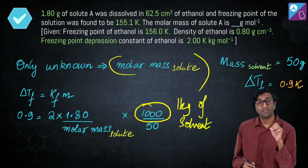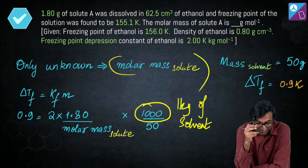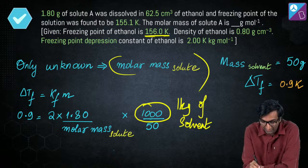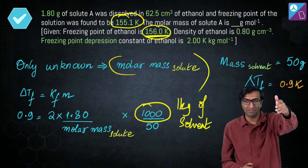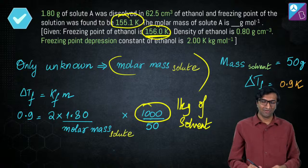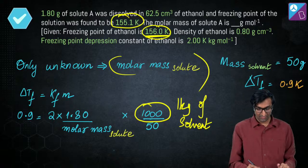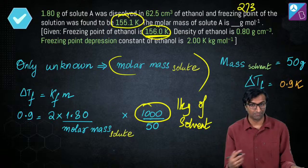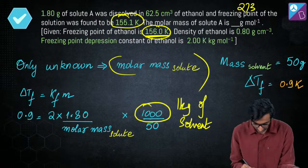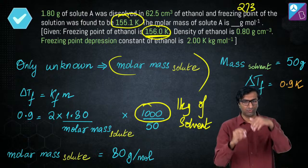The key point: 0.9 K is the freezing point depression because the pure ethanol freezing point is 156 K and the solution freezes at 155.1 K — don't accidentally use 273 K. That's for water; our solvent is ethanol. Once you substitute correctly, it's one equation with one unknown — the molar mass — and you get 80 g/mol.